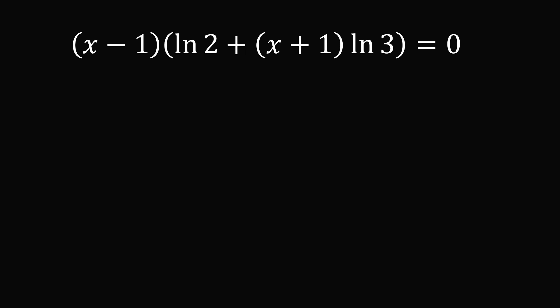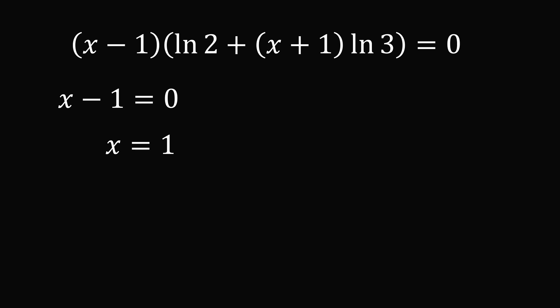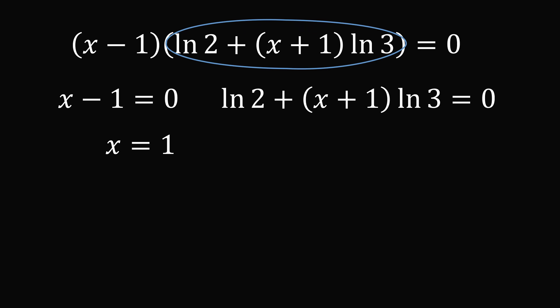We now have a manageable equation — two things whose product equals 0, so we use the zero product property. We either have one or both terms equal to 0. Setting x minus 1 equal to 0 gives x equals 1, which is the solution we found in our first attempt. But we could also set the second term equal to 0: ln 2 plus the quantity x plus 1 times ln 3 equals 0.